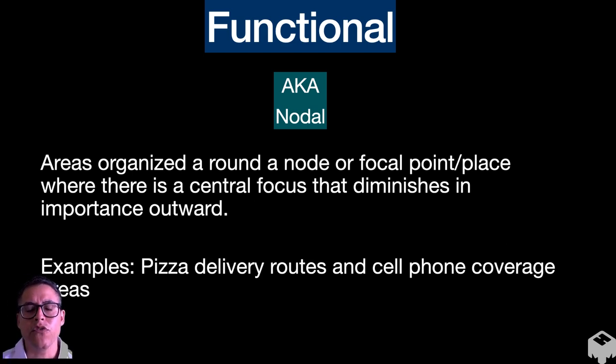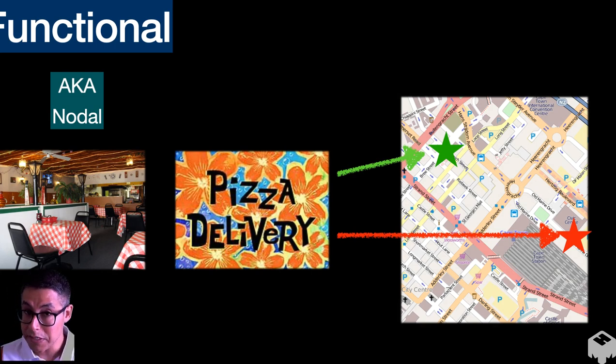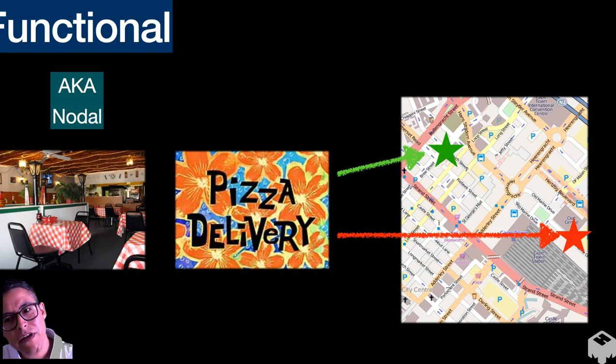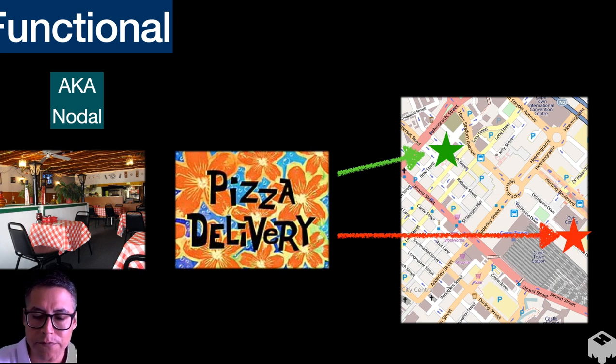So let's take a look at functional regions next. So these nodal regions are areas organized around a node or a center focal point or place where there is a central focus and that focus starts to diminish as you move outward. The importance diminishes as you move outward. So an example of this could be like a pizza delivery route, pizza delivery zone and a cell phone coverage area. So where the signal ends for a cell phone company. For instance here, I have a pizza place that I started and I'm going to deliver pizzas. But I decided that I'm going to draw the map and tell my customers, this green area, this green star here, that's where I'm going to deliver for sure. But if you live out there by this other region, I don't think I'm going to deliver that far. It wouldn't be in my best economic interest to deliver.